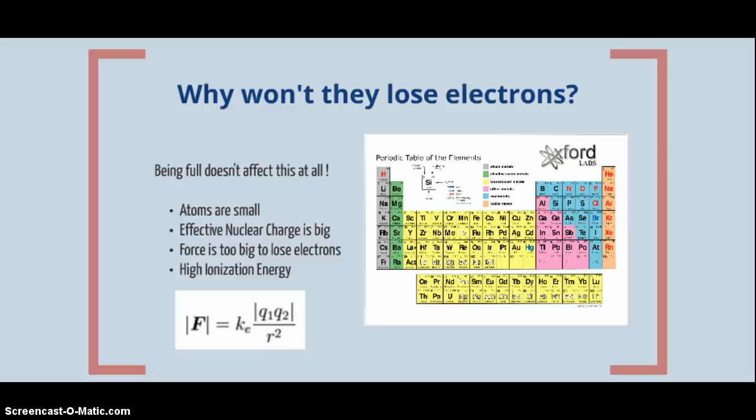So let's review again what we've had on previous lessons. Here's a periodic table. As you go from left to right, the atom size decreases. Atoms get very small, so the noble gases are small. Also, as you go from left to right, the effective nuclear charge increases.